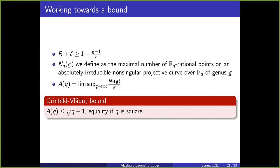Let N_q(g) be the maximal number of Fq rational points on an absolutely irreducible non-singular projective curve of genus g. Let A(q) be the lim sup of N_q(g) over g. We have the Drinfeld-Vladut bound, which says A(q) is less than or equal to the square root of q minus 1, with equality when q is a square. The equality is the important part: if q is a square, the number of Fq rational points on a curve divided by the genus is constant, so as the genus goes to infinity, the number of points also goes to infinity, meaning we should be able to create asymptotically good codes.